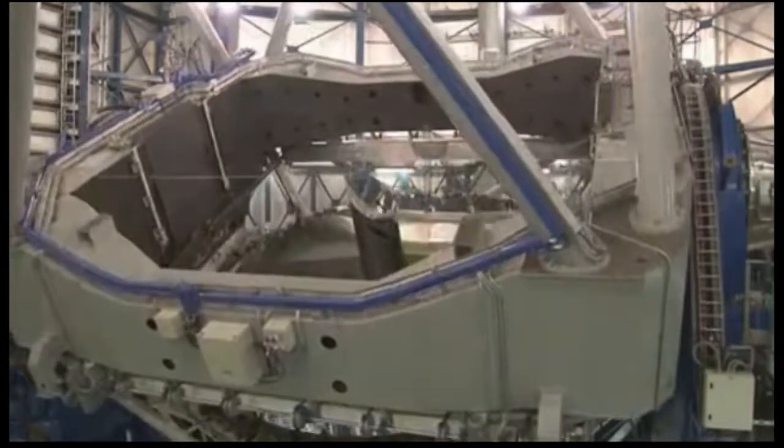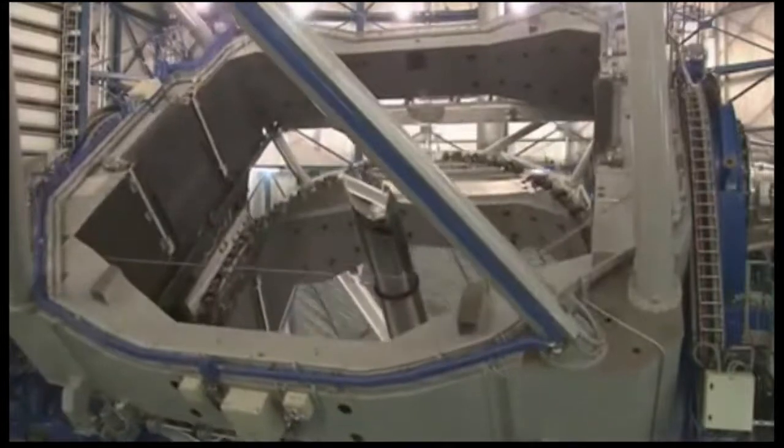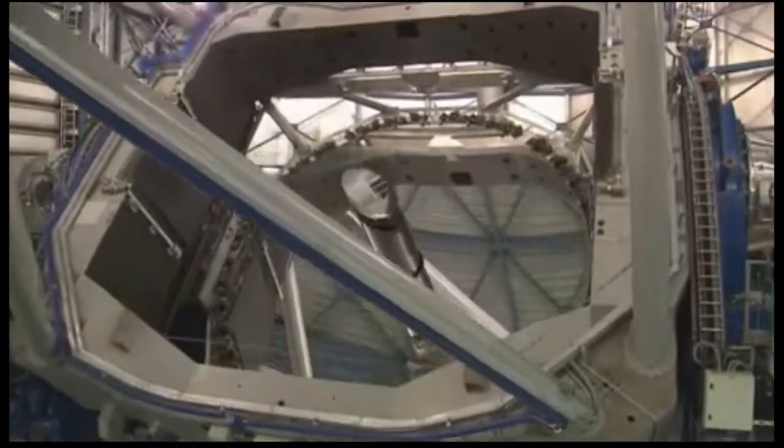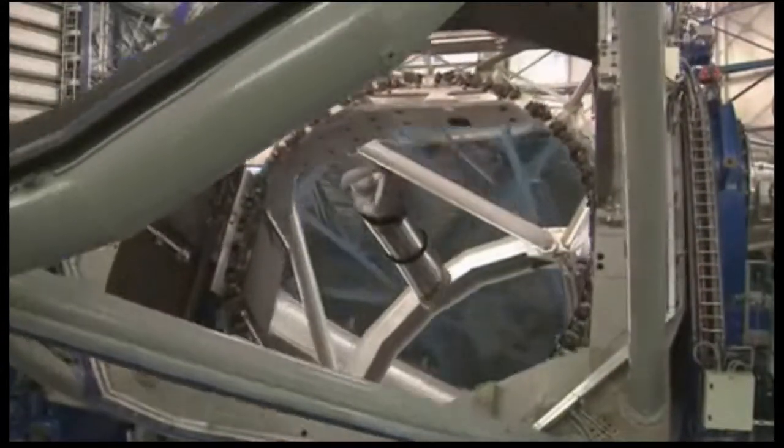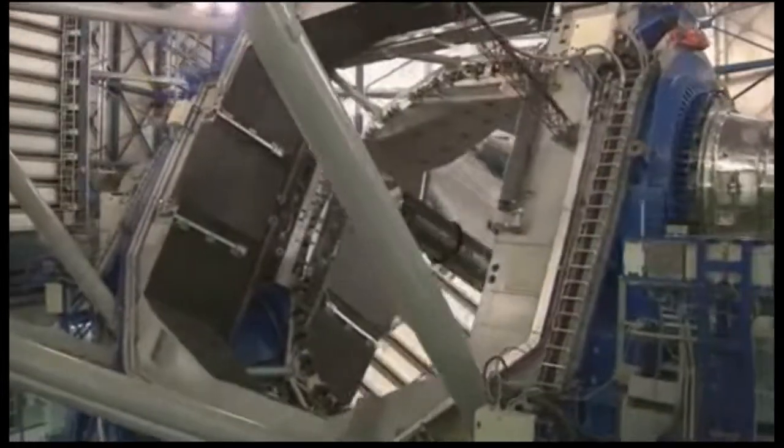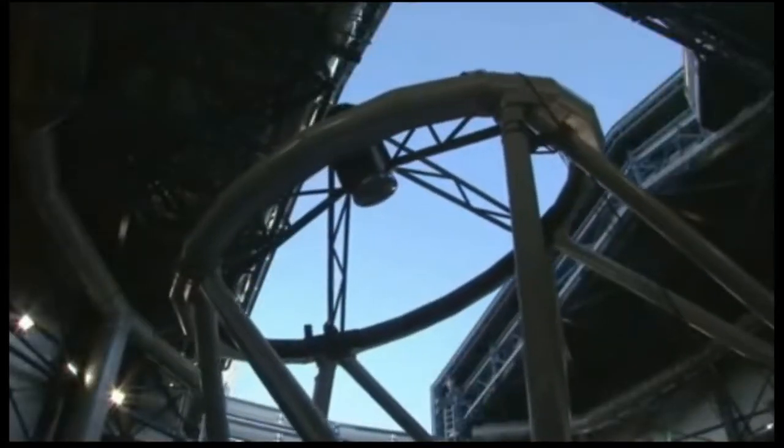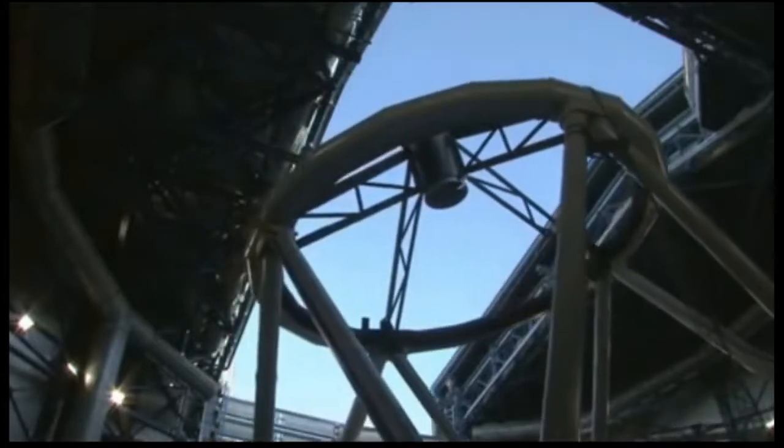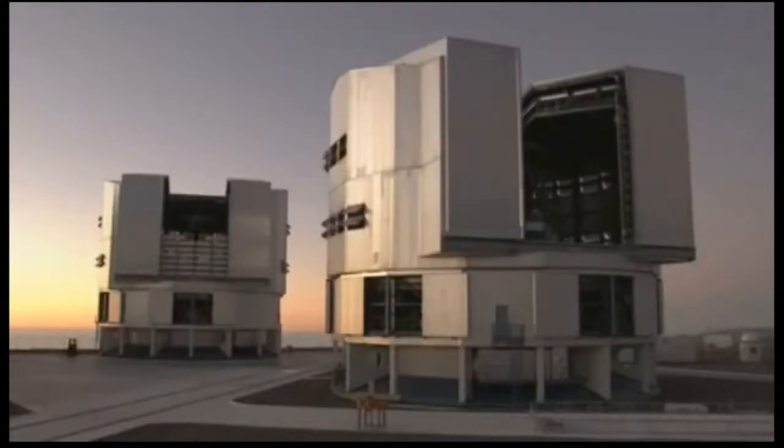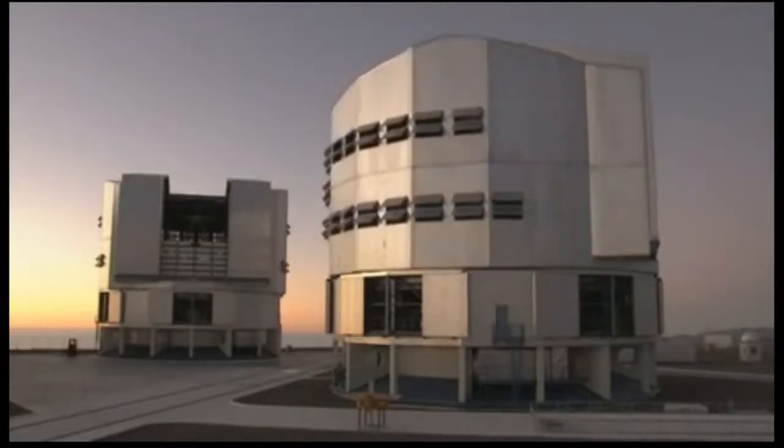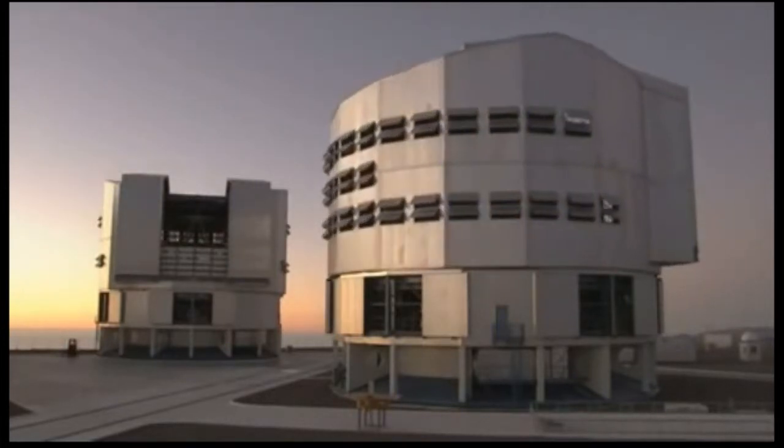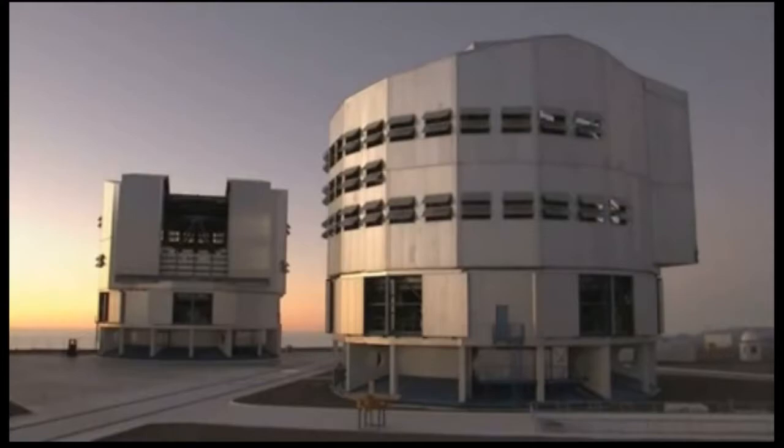Each of the four VLT unit telescopes has a primary mirror with a diameter of 8.2 meters. Such big mirrors are necessary because they collect more light and provide sharper images. Under ideal conditions and with the appropriate technology, the individual VLT unit telescope can see details of objects in space that are equivalent to viewing a tennis ball on the International Space Station from the Earth. This corresponds to a distance of about 350 kilometers.